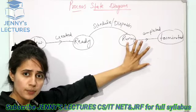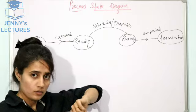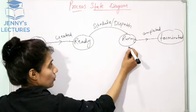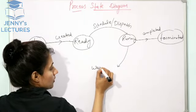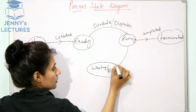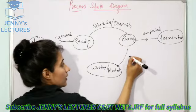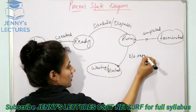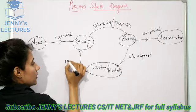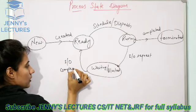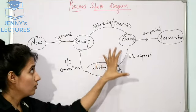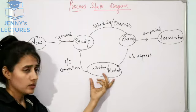Now suppose at some point the process is running and it wants to perform some I/O operations. Then the process will go to the waiting state, which is also written as the blocked state. This transition is due to an I/O request, and after the completion of the I/O operation, it goes back to the ready state — that transition is called I/O completion.